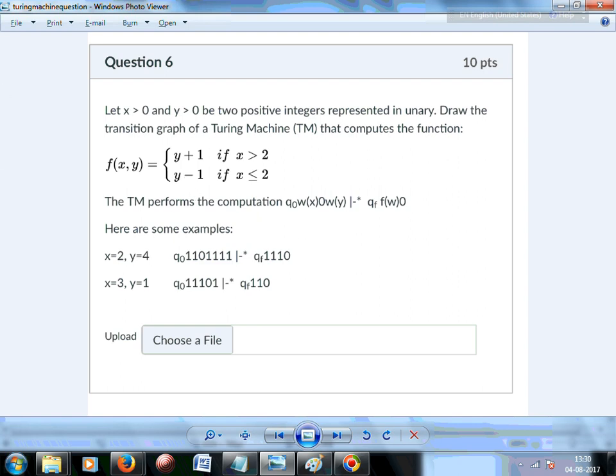Hi, so let's start with this problem. f(x, y) is equal to y plus 1 if x is greater than 2, and it should be y minus 1 if x less than or equal to 2. So we need to basically build a Turing machine for this.